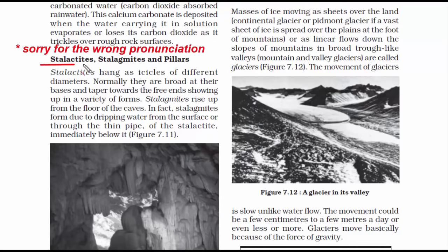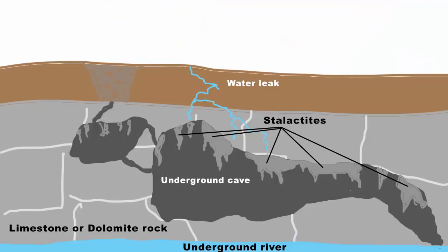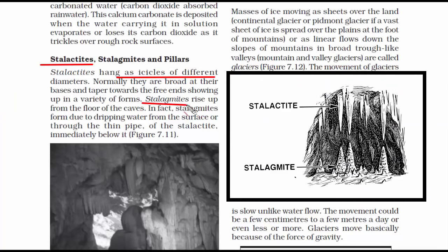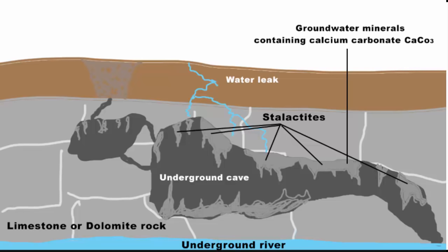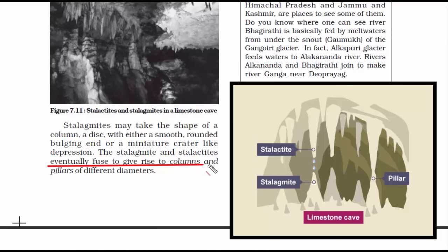The first depositional structure is stalactites. These are icicle-shaped formations that hang from the ceiling of a cave. When water drips or leaks from the ceiling of these caves, the minerals in the water — calcium carbonate — precipitate and become pointed icicle-shaped. The second one is stalagmites. They rise up from the floor of the caves. The third one is pillars. When stalactites from the ceiling and stalagmites from the ground come in contact, they eventually merge to give rise to columns and pillars of different diameters.